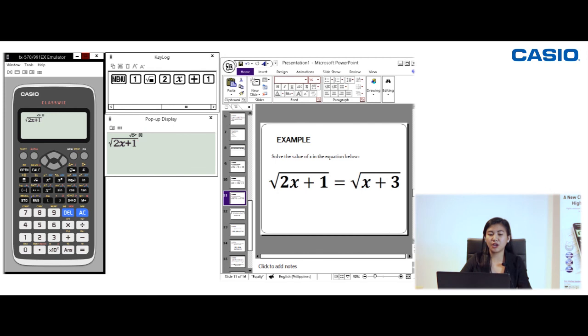Then press the right arrow key so that the equal sign will be outside the radical symbol. Press alpha and then calc. Square root of x plus 3 and then shift calc. Okay, so here the value of x must be 2 so that the radical equation will be true.